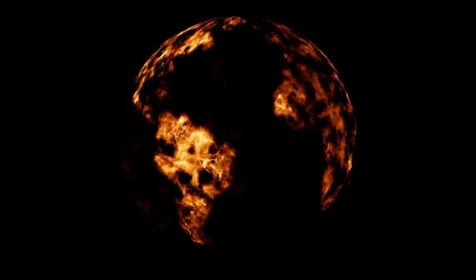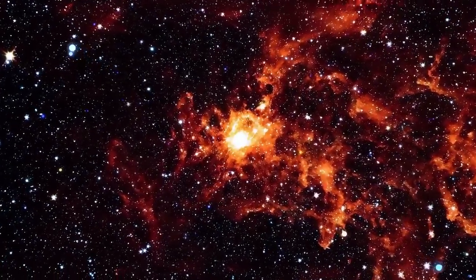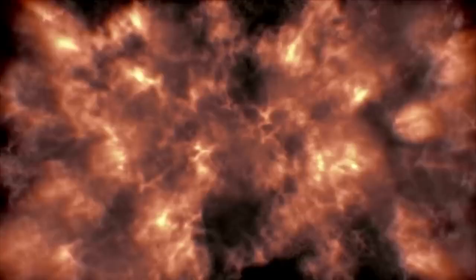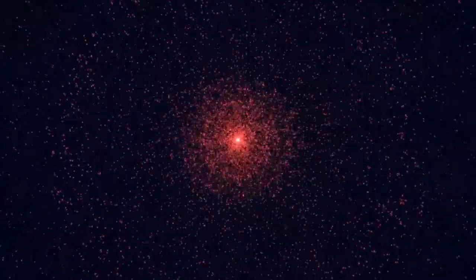It has undergone a radical transformation from a hot blue star to the cooler red supergiant we observe today. As it burns through its nuclear fuel, Betelgeuse is gradually losing mass and undergoing immense changes within its core. One of its defining features is its distinctive red hue. Unlike stars like our Sun, which shine with bright yellow light, Betelgeuse's surface temperature is relatively cool, around 3,500 Kelvin compared to the Sun's 5,500 Kelvin. This cooler temperature results in the star's red appearance, providing astronomers with important clues about its internal processes and state of evolution.